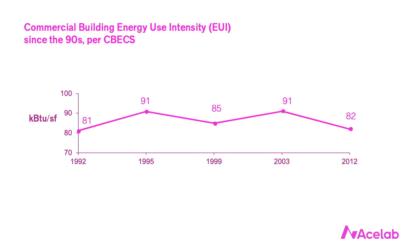And when we look at the data from these surveys, this is what we see. This graph shows the energy use intensity — how much energy we use per square foot for commercial buildings since the 90s. This is for all commercial buildings. It's not correcting for occupancy type or when or where the buildings were constructed. It's just an average to get a big picture sense of where we are in terms of energy use per square foot.